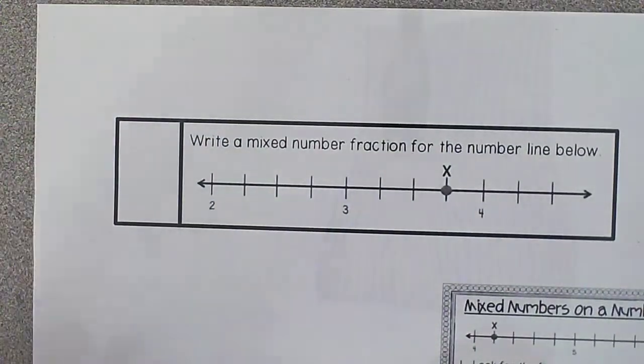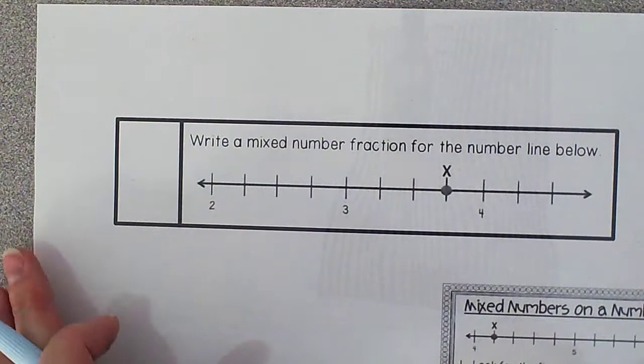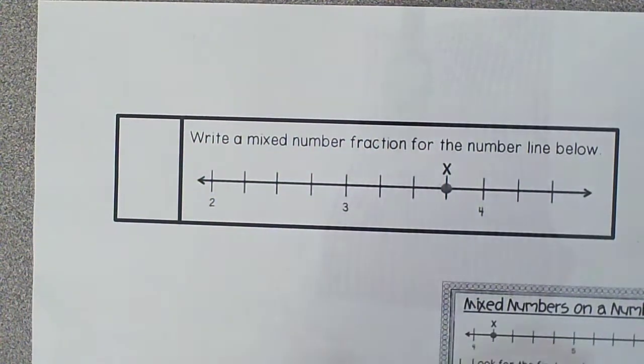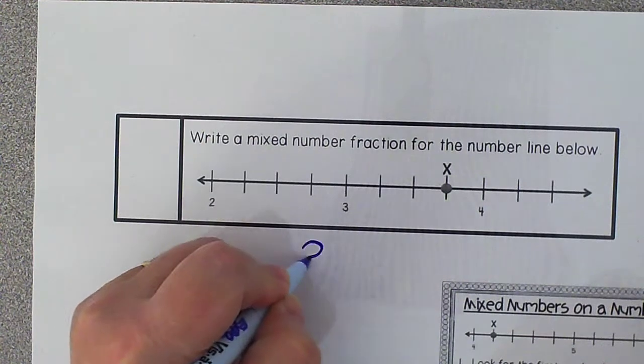And lastly, we have another mixed number number line. What is the last number you see before you get to the X? If you said 3, you're right.